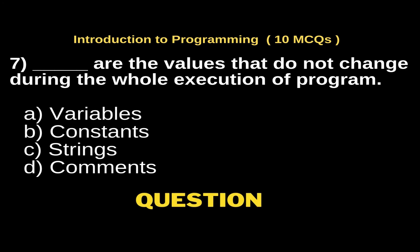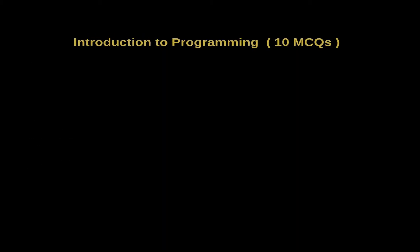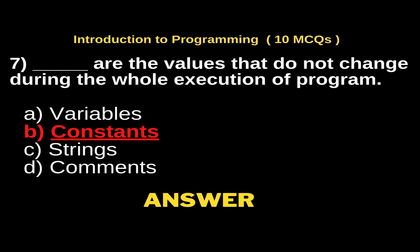Dash are the values that do not change during the whole execution of program. Options: Option A, variables; Option B, constants; Option C, strings; Option D, comments. And the right answer is Option B, constants.